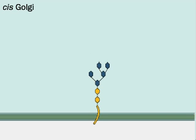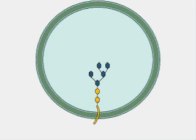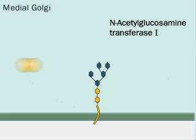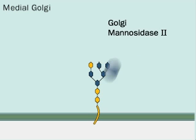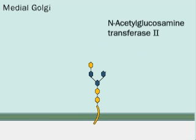Vesicles transport the modified glycoprotein to the medial Golgi cisternae, where N-acetylglucosamine attaches and more mannose molecules leave the molecule.